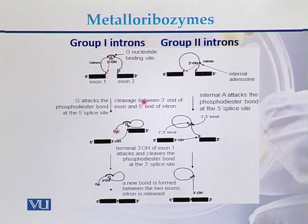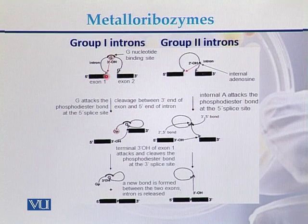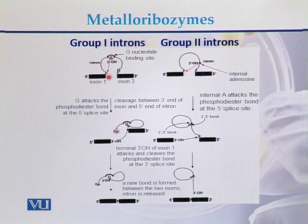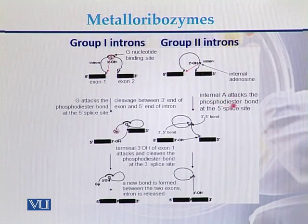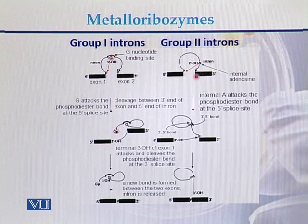Once it attacks, cleavage occurs between the 3' end of the exon and the 5' end of the intron. While in case of group 2 introns, between the two exons there is the sequence of the intron. In group 2 introns, an internal A attacks the phosphodiester bond at the 5' splice end. So this A attacks on the phosphodiester bond present at the 5' splice site. This is the difference between group 1 introns and group 2 introns.